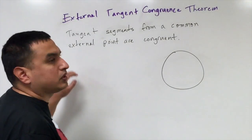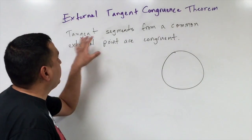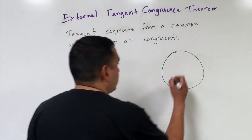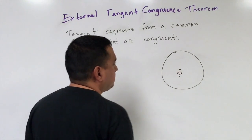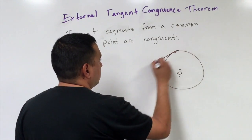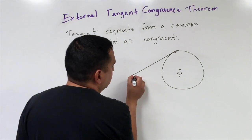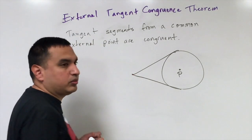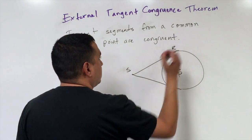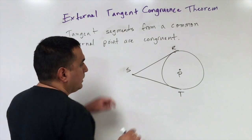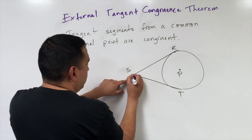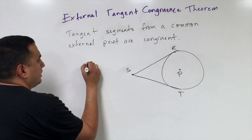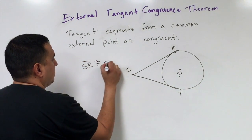Next we introduce the external tangent congruence theorem: if two tangent segments are drawn from a common external point to a circle, then they are congruent. For example, if circle P has tangent segments SR and ST from the same external point S, then segment SR is congruent to segment ST.